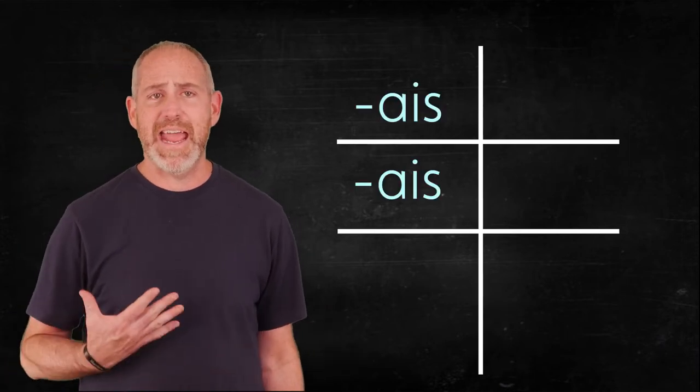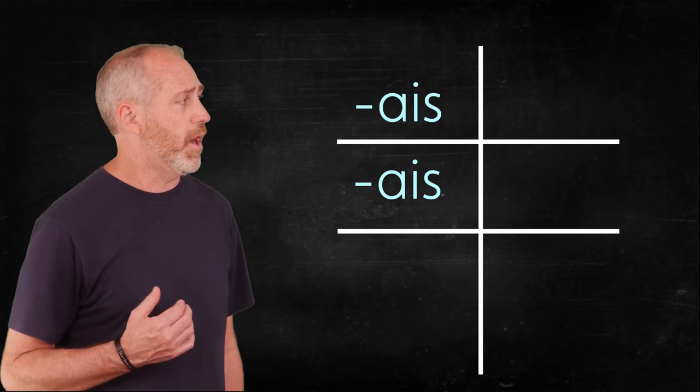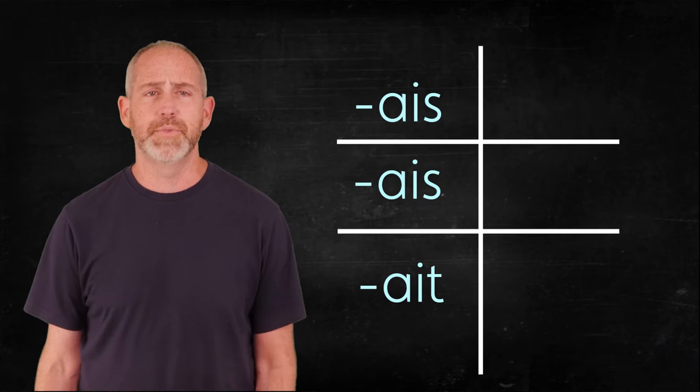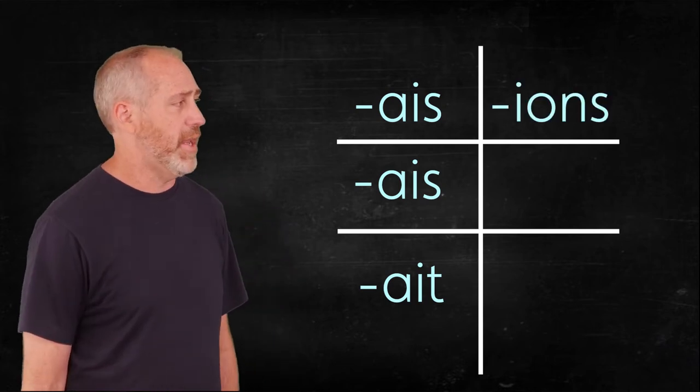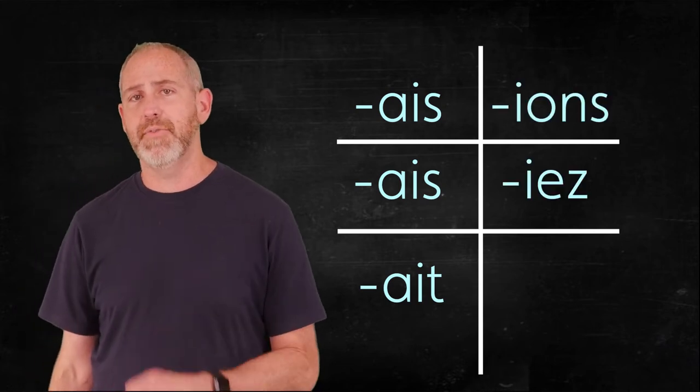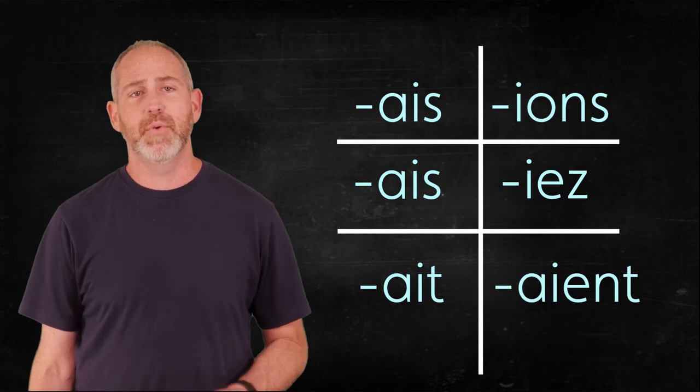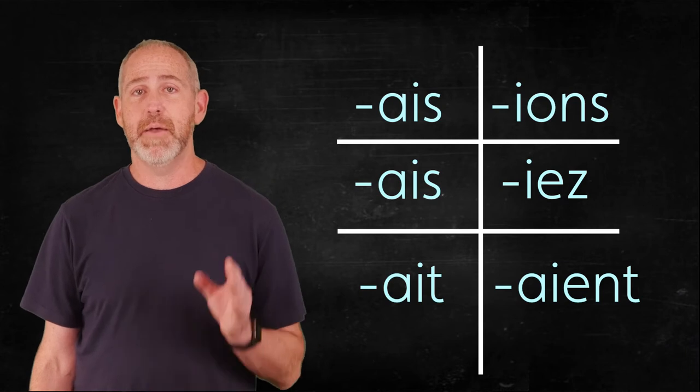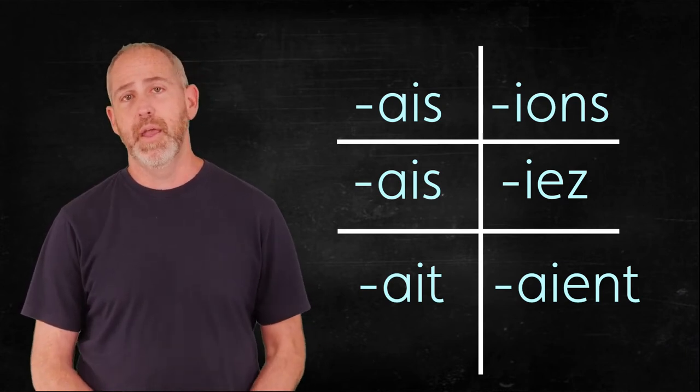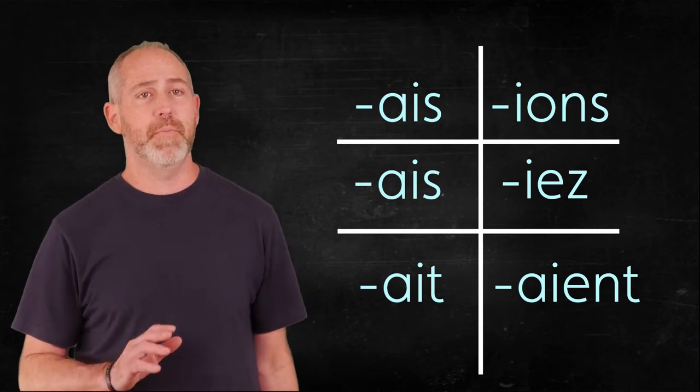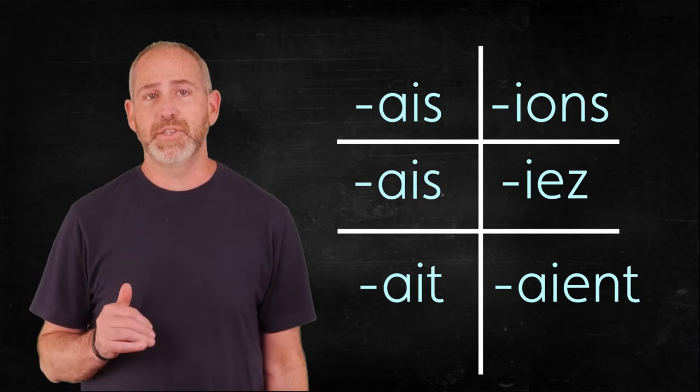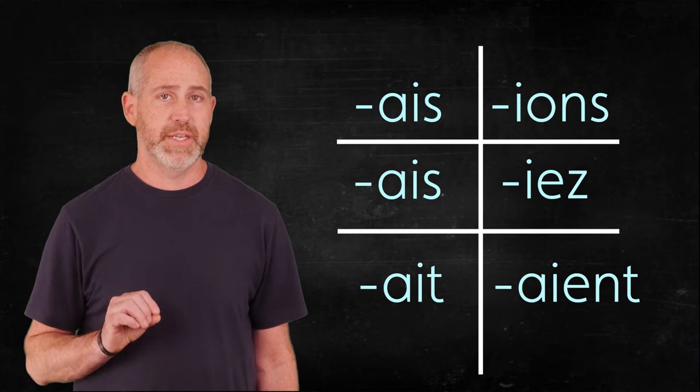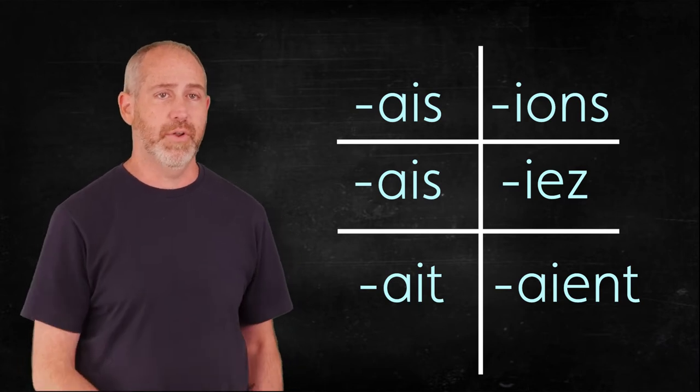So let's just really quick go to our chart here and let's put the endings up and just quickly go over those again, refresh our memories. Here are the endings. We had A-I-S for the first two forms, and then we had A-I-T in the bottom left or the il, elle and on forms. And then we had I-O-N-S for nous and I-E-Z for vous and ils and elles were A-I-E-N-T. So those were our endings back when we talked about the imperfect tense.